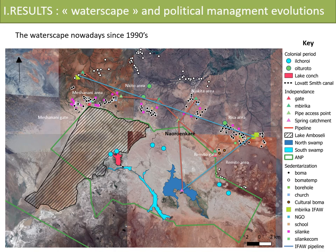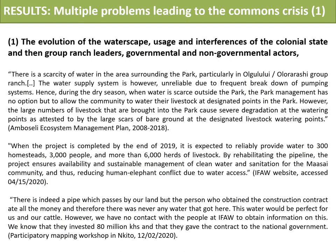And finally, the complete subdivision of the group ranch of Olgolului-Ororashi. This period is also marked by the project of the rehabilitation of the pipeline, as you can see with the IFO pipeline in blue, which is still nowadays not working. As you can see on these different maps, the waterscape has been evolving a lot through different periods. Still, interferences are there.